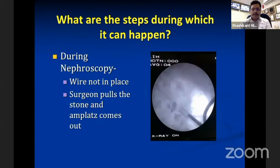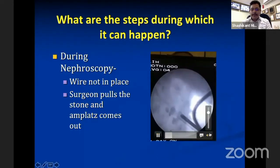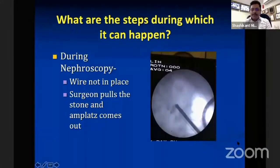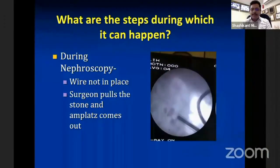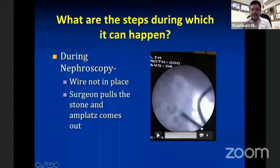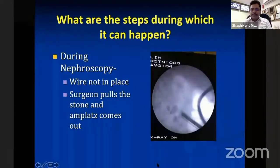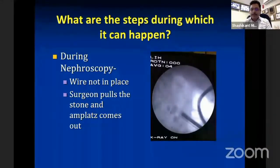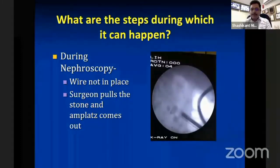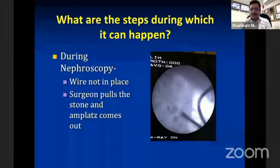When you are experienced and full of confidence, you may feel that the wire is not required and proceed without a wire in place. In this scenario, a confident surgeon is doing nephroscopy, starts seeing the stone, finds that the Amplatz sheath size matches the stone, and feels it can come out. He picks up the stone and starts pulling — the over-enthusiastic assistant loses grip — and with the over-enthusiastic surgeon, the Amplatz is out. This is the most common scenario.